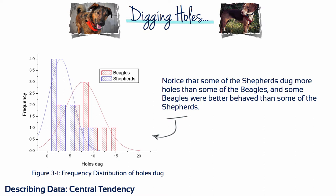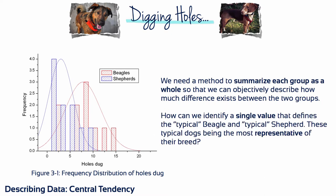There's an overlap between the two groups. Some Shepherds actually dig more holes than some of the beagles. What we need is a method to summarize each group as a whole, so that we can objectively describe how much difference exists between the two groups. A measure of central tendency will identify the average or typical number of holes dug to serve as a representative value for each dog breed. Then we can use the two averages to describe the two groups and to measure the difference between them.